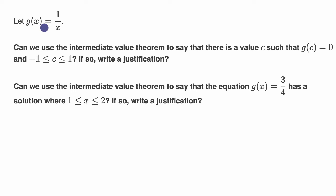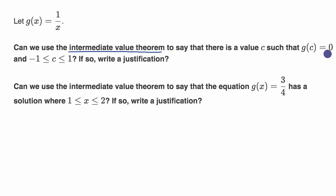Let g of x equal one over x. Can we use the intermediate value theorem to say that there is a value c such that g of c is equal to zero, and negative one is less than or equal to c is less than or equal to one?